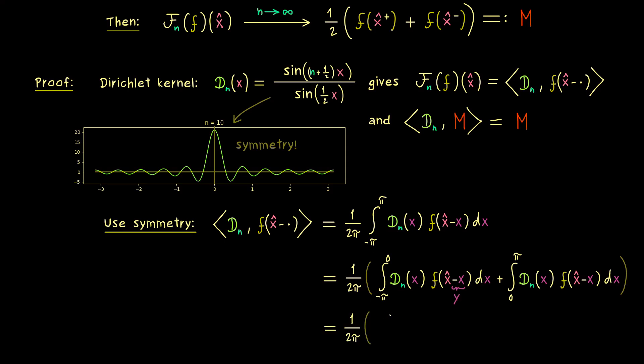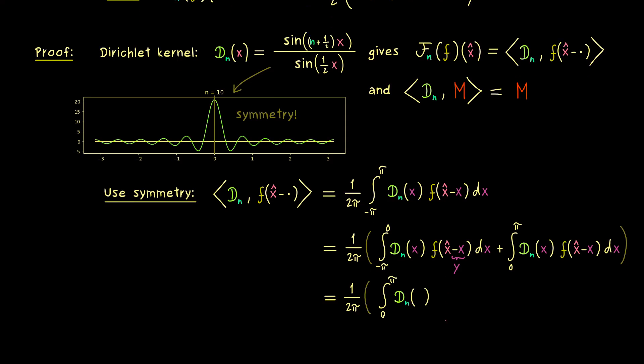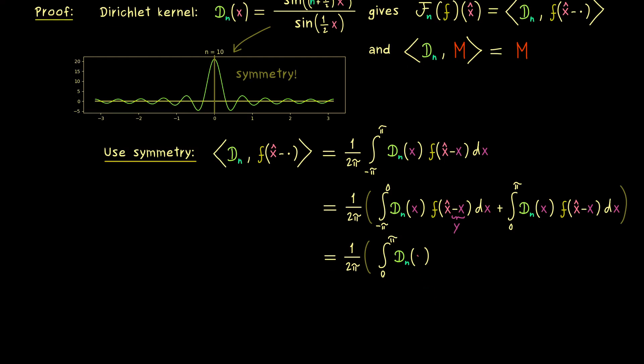Indeed such a splitting always works but now we want to bring them back together. Therefore we just substitute minus x with a new variable called y. By doing that the first integral also goes from zero to plus π. Moreover we can also use our symmetry of D_n because D_n of y is the same as D_n of x. In short an even function does not care about a minus sign. However inside the function f it matters so there is the difference between the left integral and the right integral. But this is not a big problem because we can still put them together and write them as one integral again.